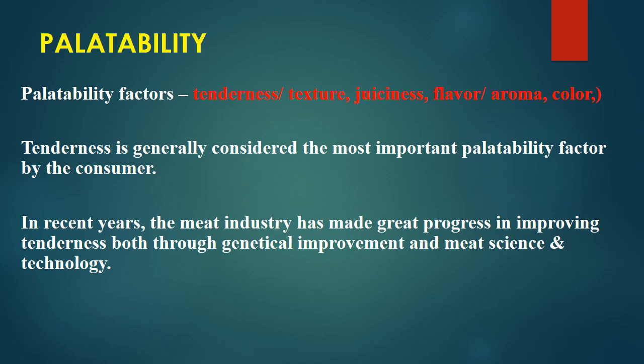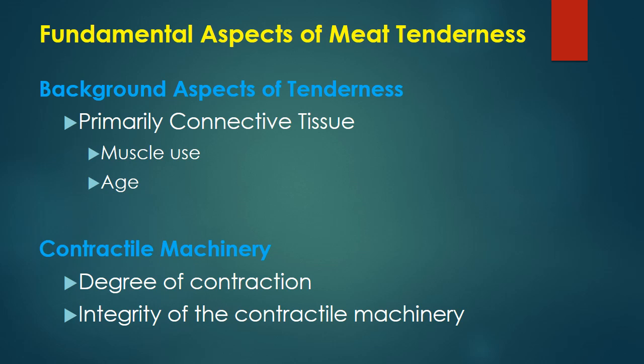Texture of meat is part of tenderness, and juiciness and flavor are also important. Tenderness is the main focus for today's lecture, and we will discuss in detail how aging helps improve it. In recent years there have been many improvements in science and technology related to meat production and meat science. Through genetic improvement and the application of meat science and technology, tenderness and palatability can both be improved.